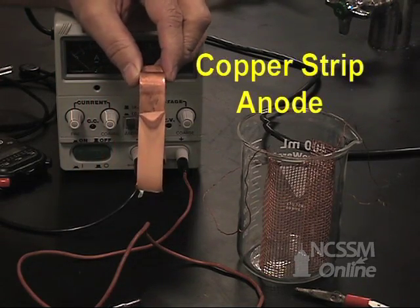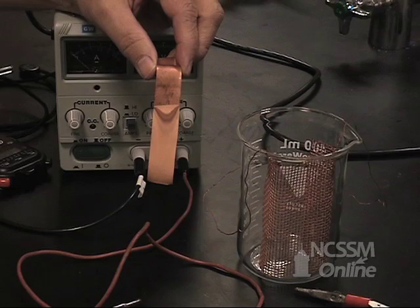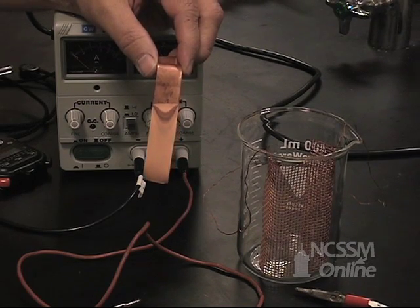We're going to have a copper strip as our anode. We're going to oxidize copper in the anode, and the copper ions are going to go into solution.